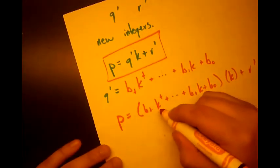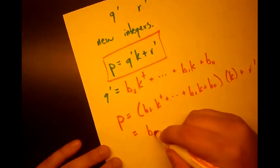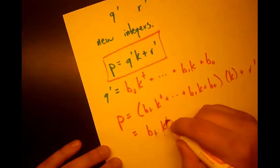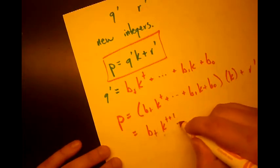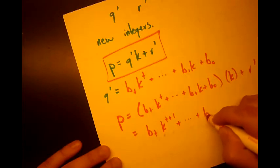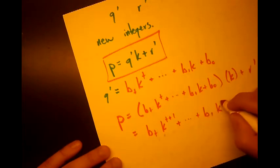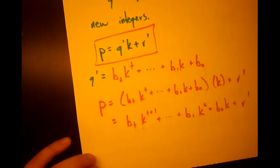So now we're going to factor this k into here. And we're going to say this is b sub t k to the t plus 1, plus dot dot dot, plus b sub 1 k squared, plus b naught k, plus r prime. And